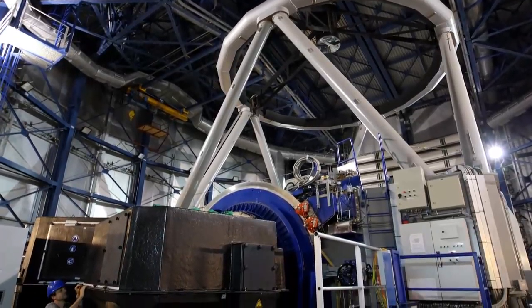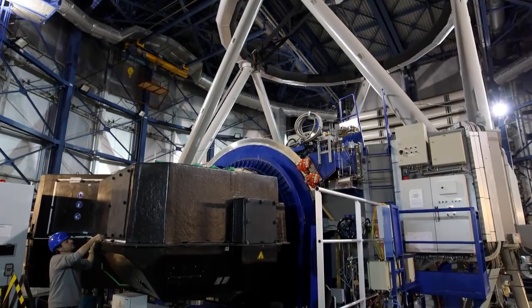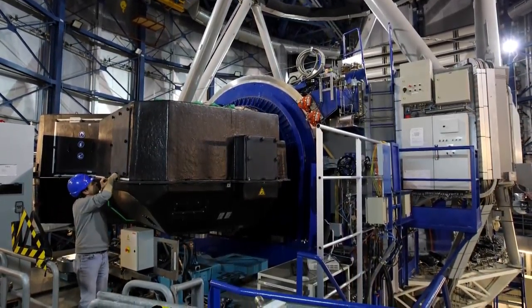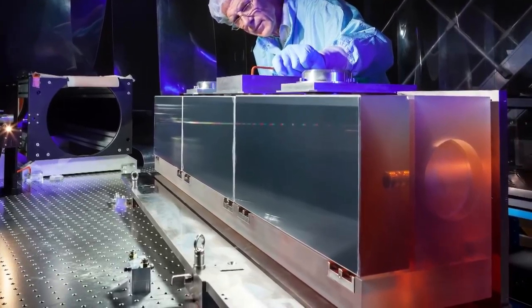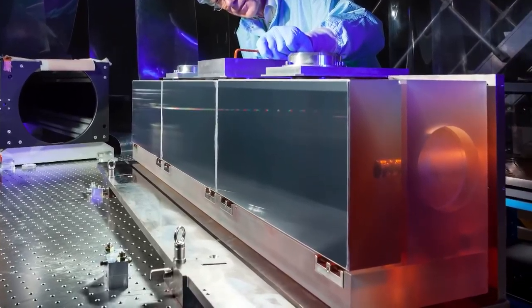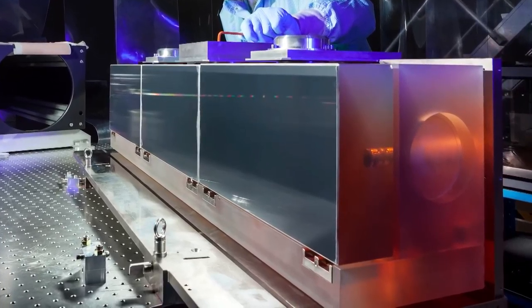SPHERE is able to find and study faint planets masked by the glare of their host stars. And in the near future, the ESPRESSO spectrograph will arrive at the VLT, where it will surpass HARPS.